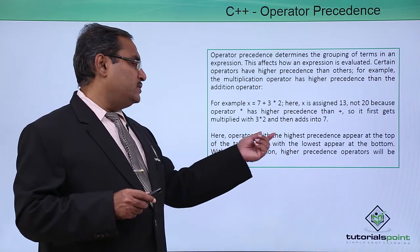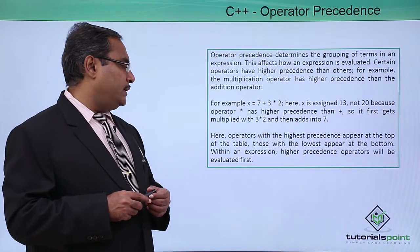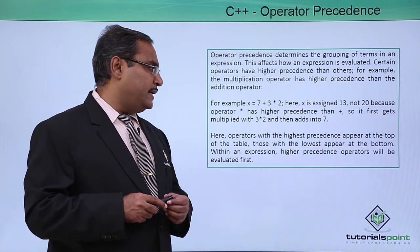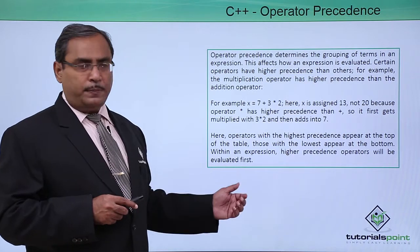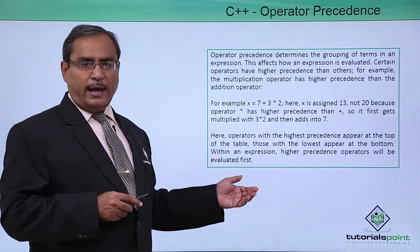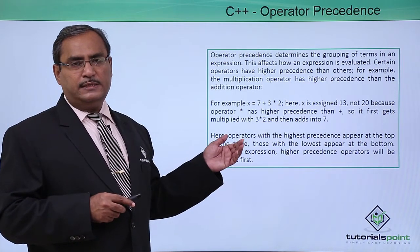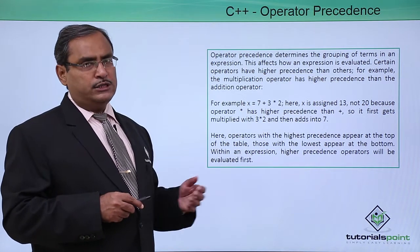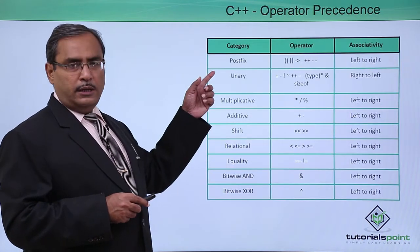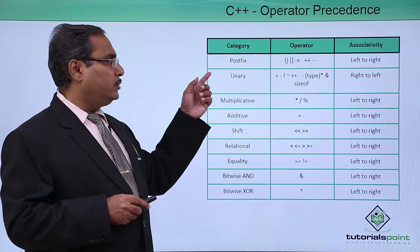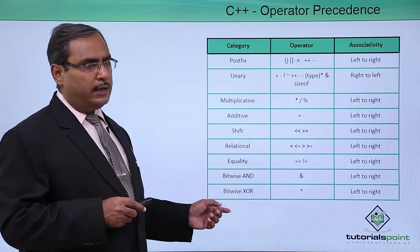Here operators with the highest precedence appear at the top of the table and those with the lowest precedence will be at the lower part. Now we are going to have the operator precedence table where the highest precedence operator will be at the top and lowest precedence operator will be at the bottom.